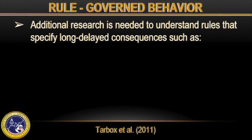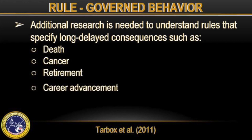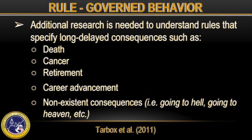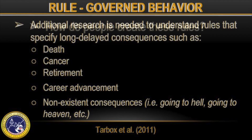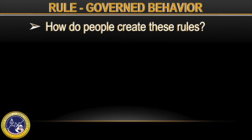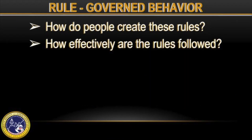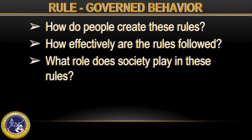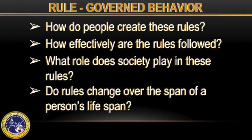Now that we are more familiar with Rule-Governed Behavior and its current implications towards behavior management and society at large, where do we go from here? Tarbox and colleagues touch on some implications for future research. More research is needed to understand attempts to establish the ability to follow rules that specify long-delayed consequences, such as death, cancer, retirement, career advancement, or non-existent consequences, such as going to hell or heaven. Some research questions to ask are: How do people create these rules? How effectively are they followed since they equate delayed consequences over immediate ones? What role does society play in these rules? Do rules change over the span of a person's lifespan?